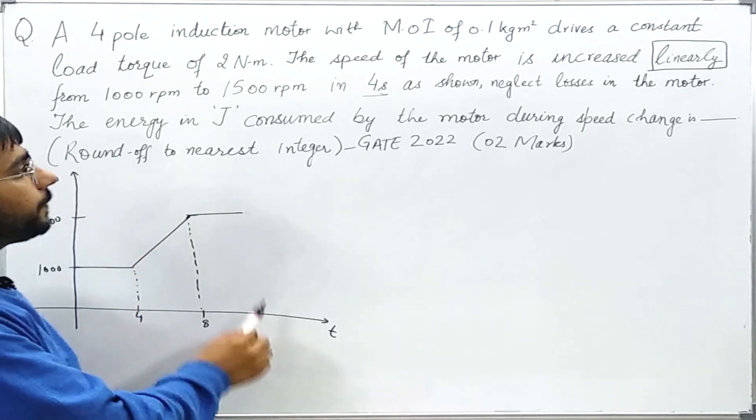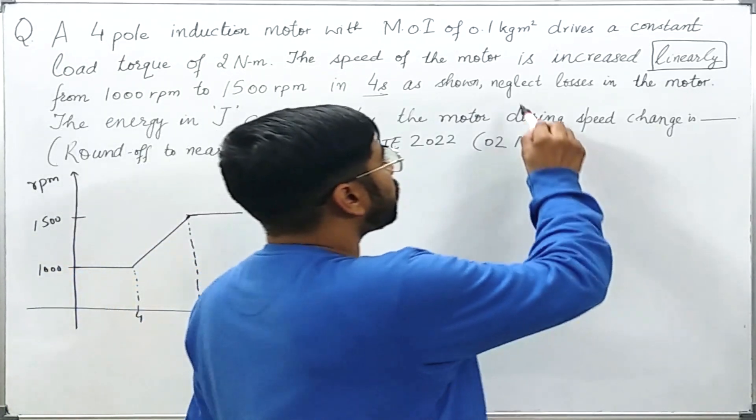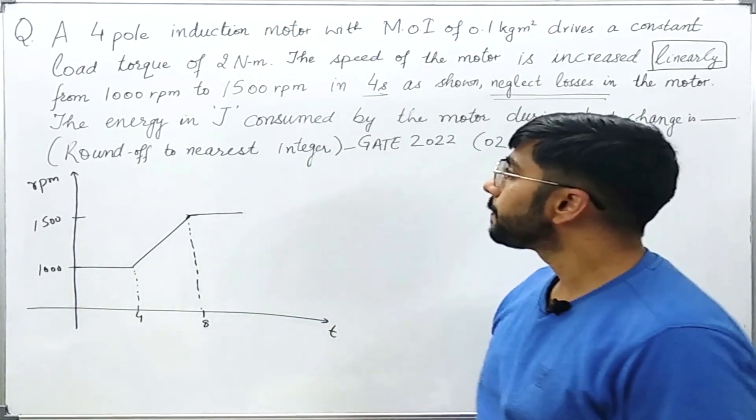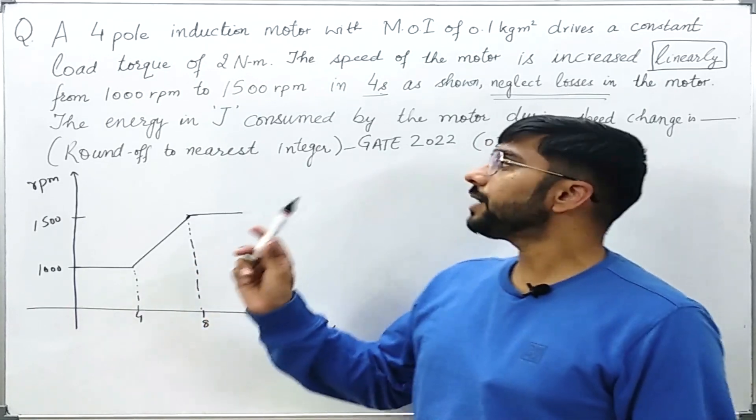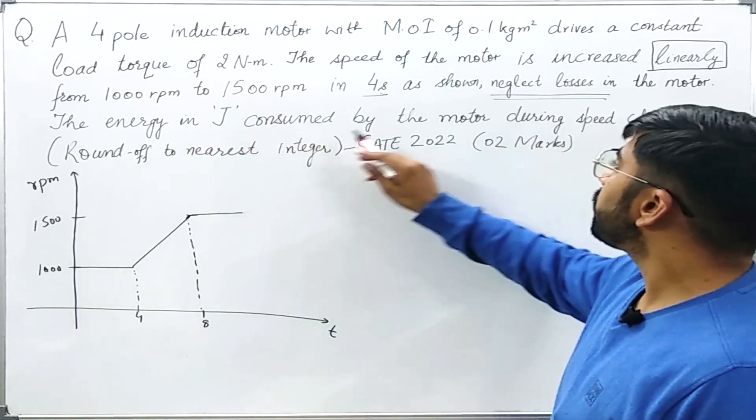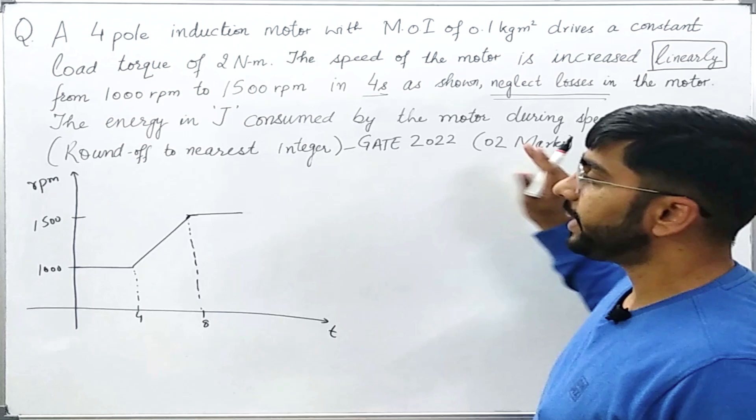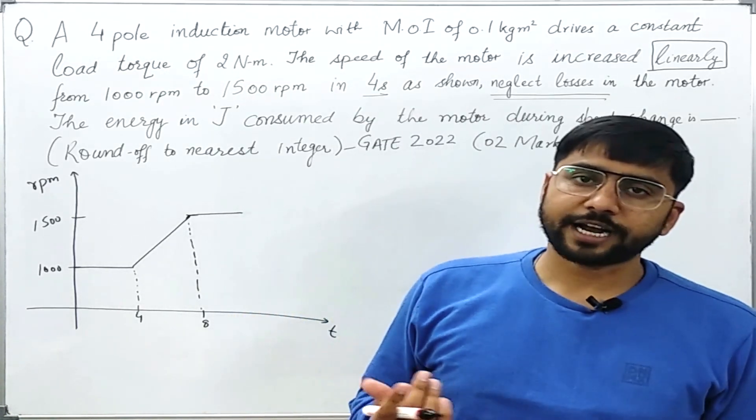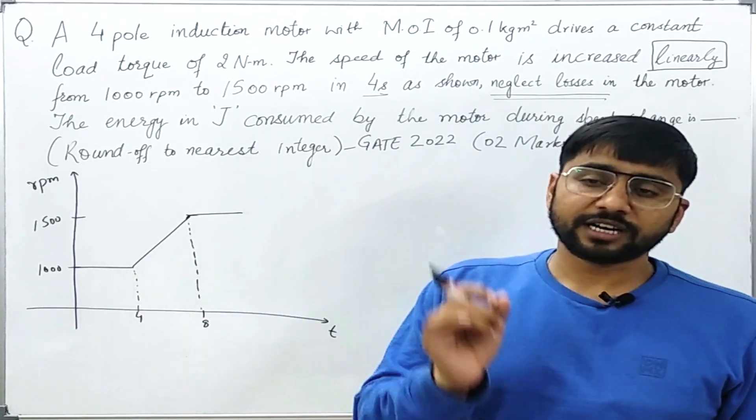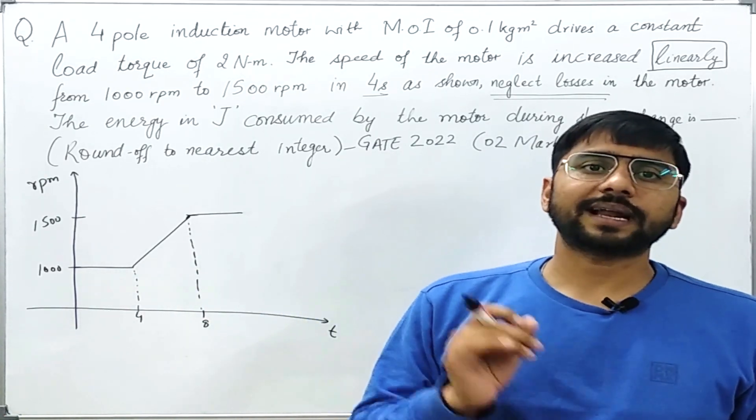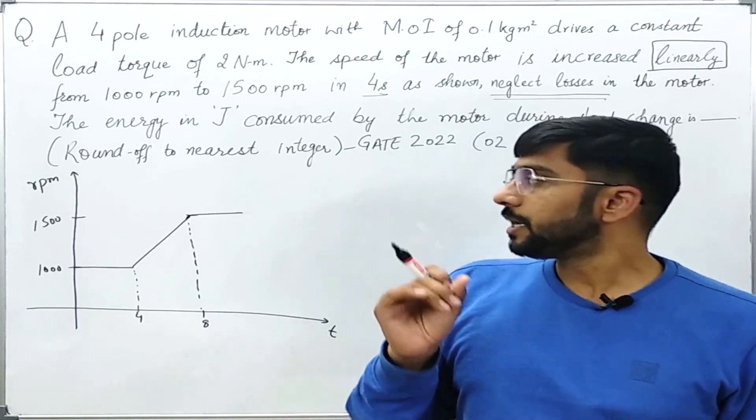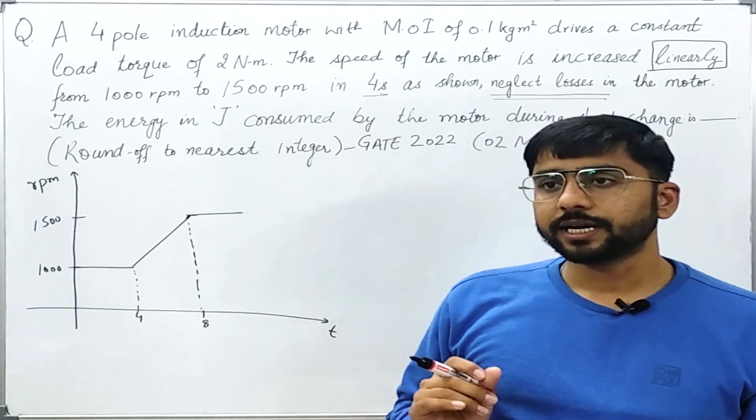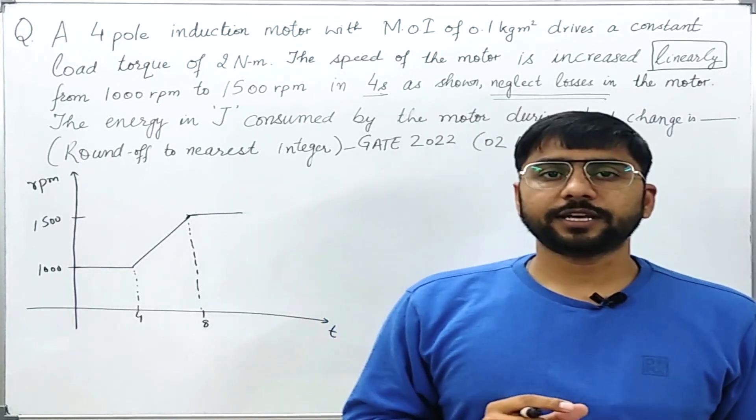From 1000 rpm to 1500 rpm in 4 seconds as shown in this figure. This figure I have drawn here. We are also told that we should neglect the losses. Now this part is also important. Now what we are asked - we are asked the energy consumed by the motor during the speed change interval. Now as far as I understand this question does not require even the minimum electrical engineering concept. It just depends upon the physics which we have studied in the 11th class.